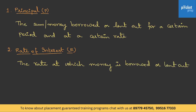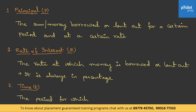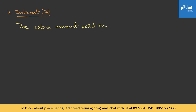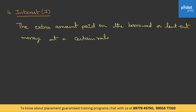The rate of interest is always expressed in percentage. The third quantity is Time — it is the period for which the money is borrowed or lent out. The fourth term is Interest — it is the extra amount paid on the borrowed or lent out money at a certain rate for a certain period.